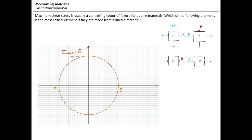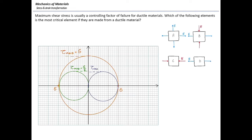For element C, the Mohr circle passes through zero and negative 15, so the maximum shear stress is the radius, which is half of sigma. For element D, principal stresses are positive sigma and zero, giving again a maximum shear stress of sigma over 2. Therefore, the most critical element with the highest maximum shear stress is element B.